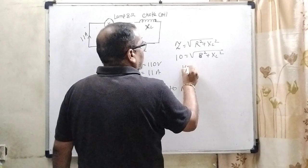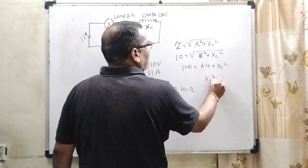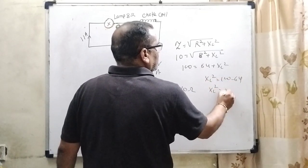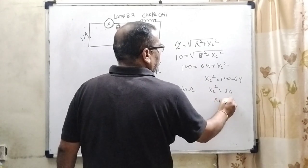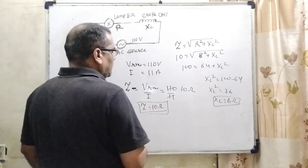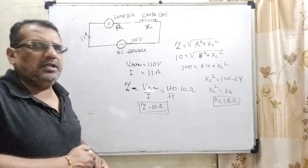Squaring both sides, we get 100 equal to 64 plus XL square, then XL square equal to 100 minus 64, then XL square equal to 36, then XL equal to 6 ohm. So, here our two answers: impedance is 10 ohm and XL inductive reactance is 6 ohm.